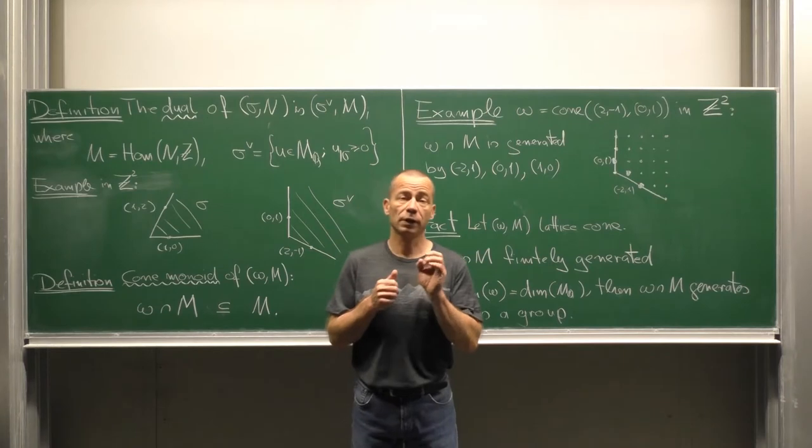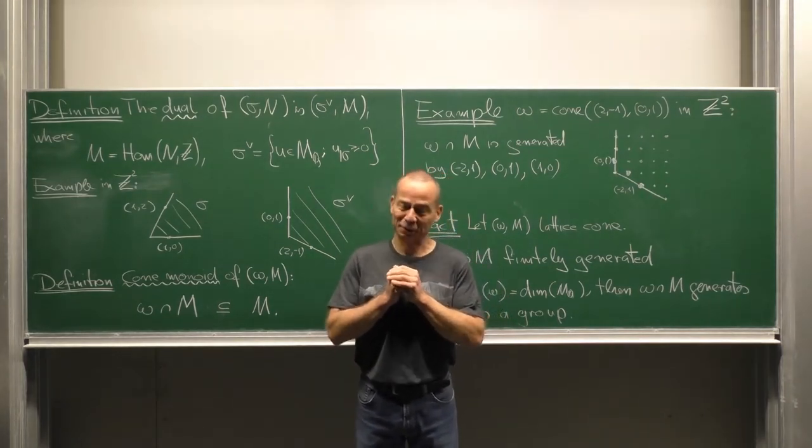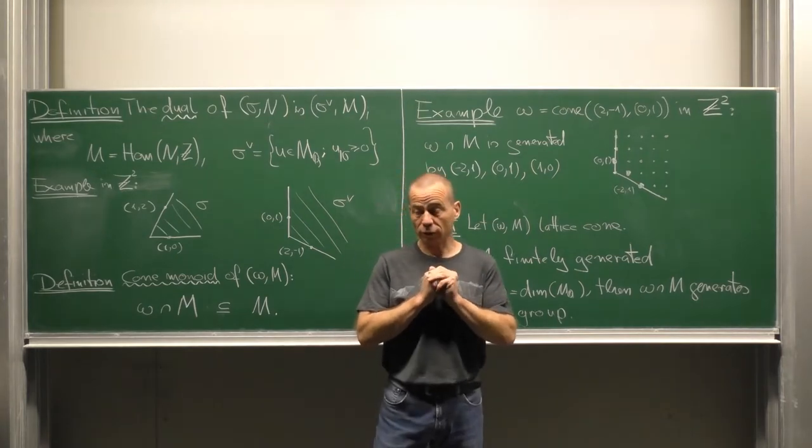Hello everybody! In this clip we pass from lattice cones in a covariant manner to affine toric varieties.